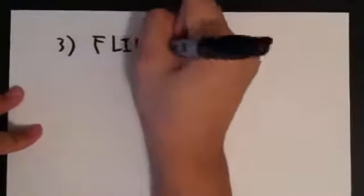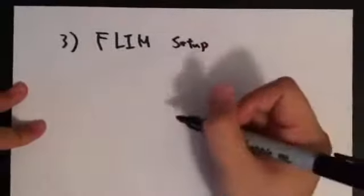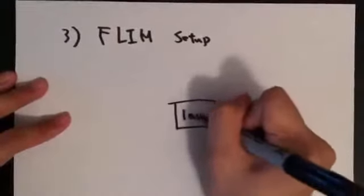Now let's talk about the FLIM setup. First, FLIM requires a light source, which can be a pulse laser.